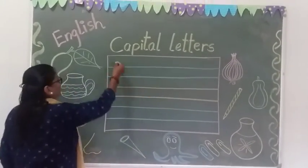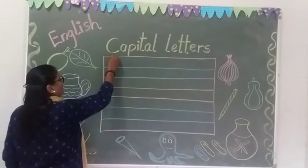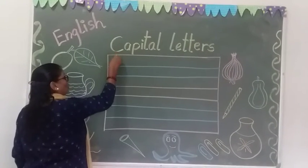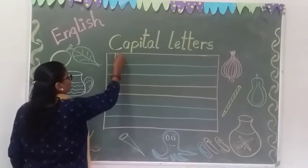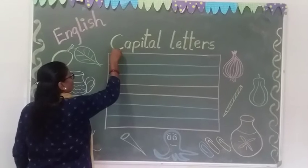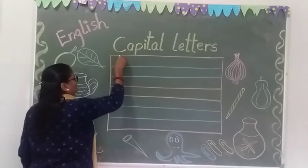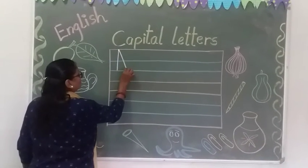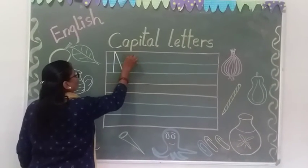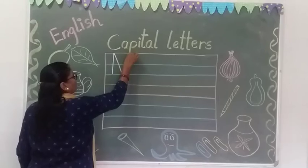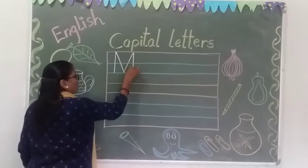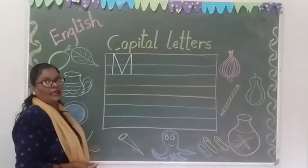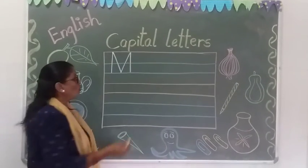First of all, touch the red line to the blue line — one standing line, then standing line, down to up, up to down standing line. M for mango.